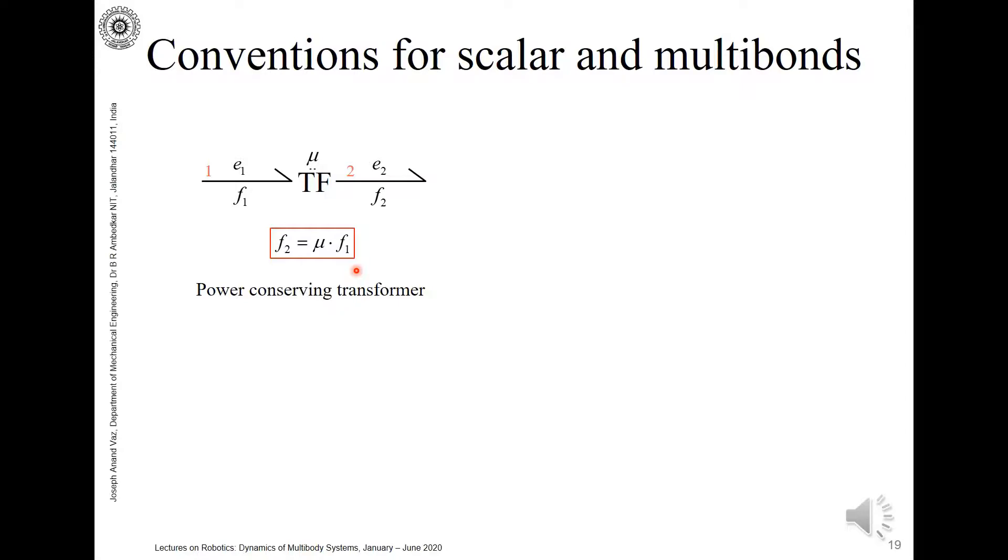And because the transformer is a power conserving transformer, the incoming power, that is e1·f1, will be equal to e2·f2. We make use of this relationship, we substitute it here, and we get e2 equal to μ·f1. We can rearrange this slightly. When we compare the left-hand side and the right-hand side, if this relationship is to be true always, irrespective of the value of f1, then it's necessary that e1 equal to μ times e2.